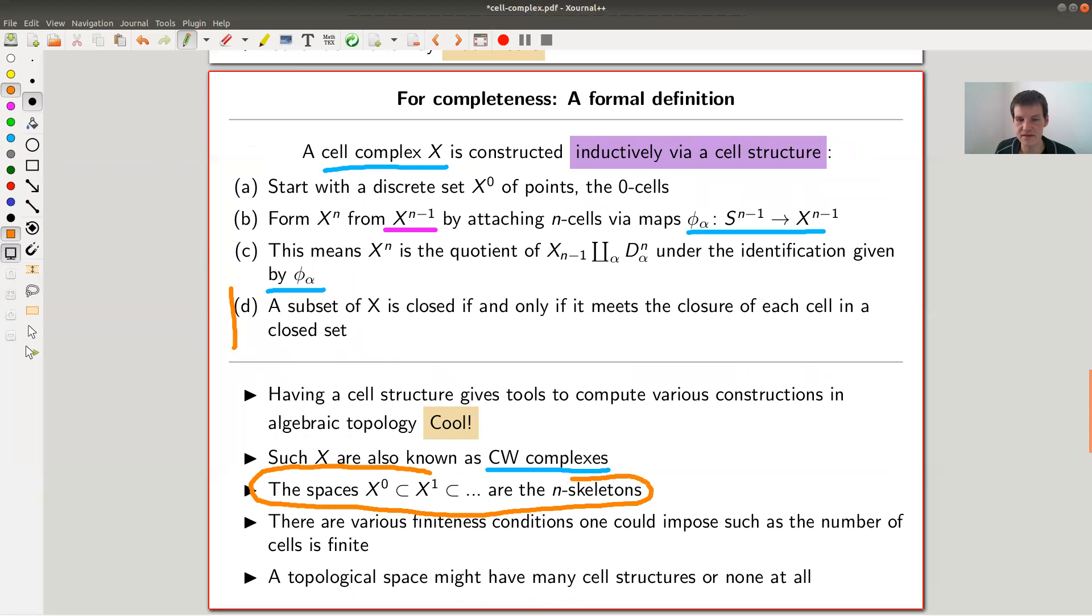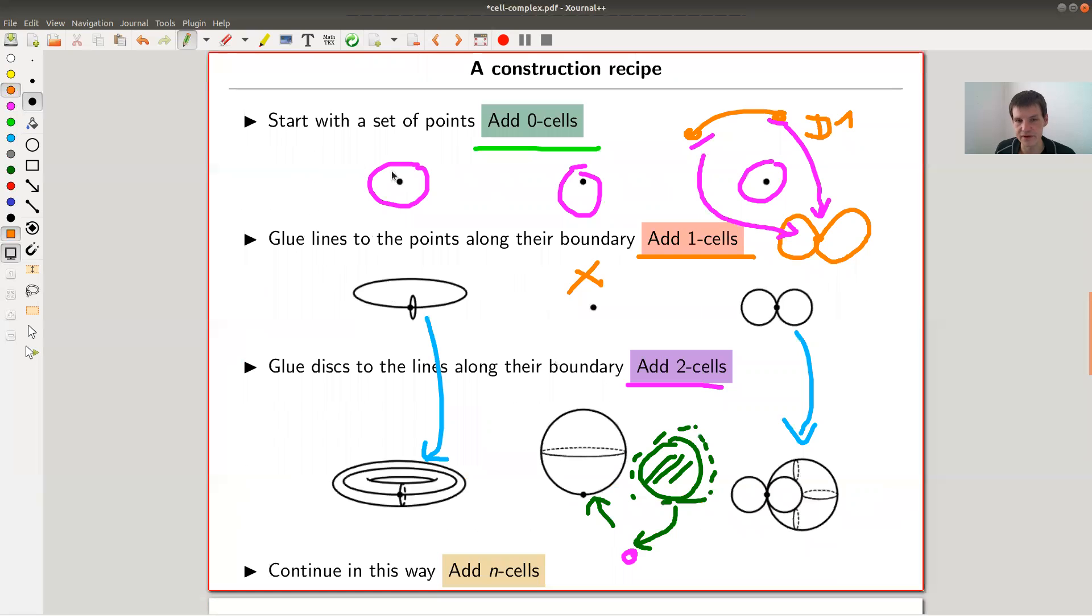There's a certain way of doing topology on this, called the weak topology. A subset is closed if and only if it meets the closure in each cell in a closed set. It's defined cell-wise, piecewise. The nice thing is you have this cell filtration, and each skeleton itself is a relatively easy object.